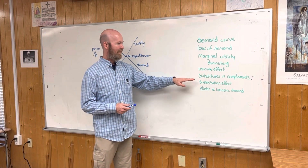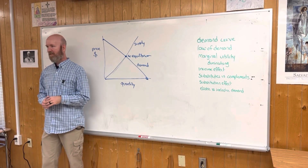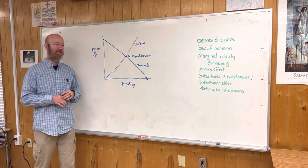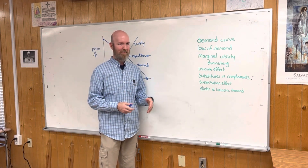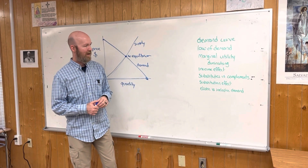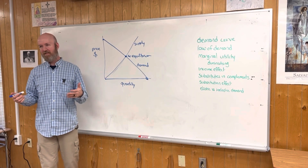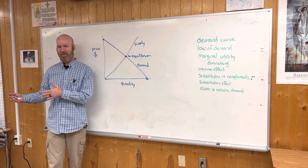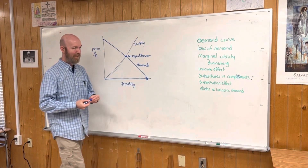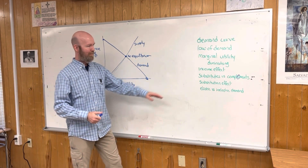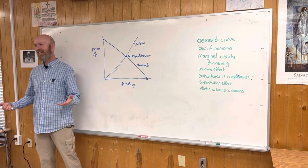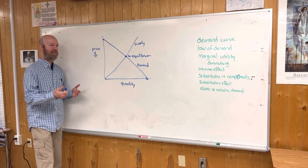Substitutes and complements. A substitute is something that can be substituted for one product. Maybe oatmeal cookies can be substituted for chocolate chip cookies, but if chocolate chip cookies became super expensive, maybe you'd find a substitute like Oreos. A substitute is just something that can replace a product, good, or service. If there are more substitutes, price tends to go down because people won't buy the product if it's too expensive — they'll just buy the substitute. Now, complements — spelled with an E, not an I. A complement is something that pairs well with something else. What's a complement for chocolate chip cookies? Milk. So if somebody's buying chocolate chip cookies, they might also buy milk because it's a complement.